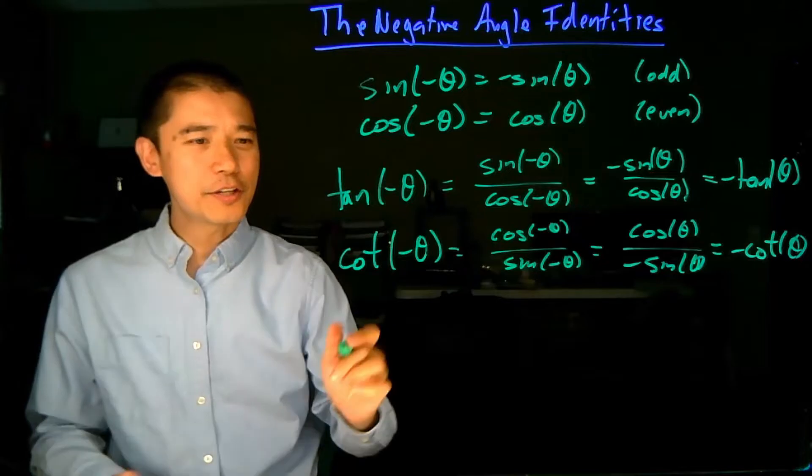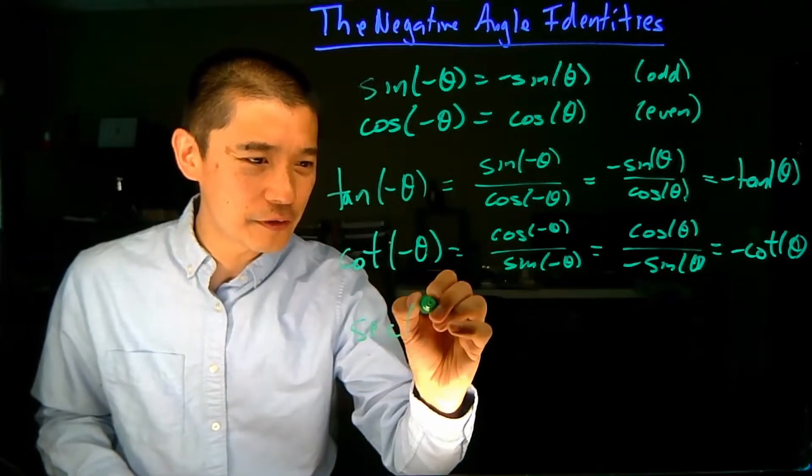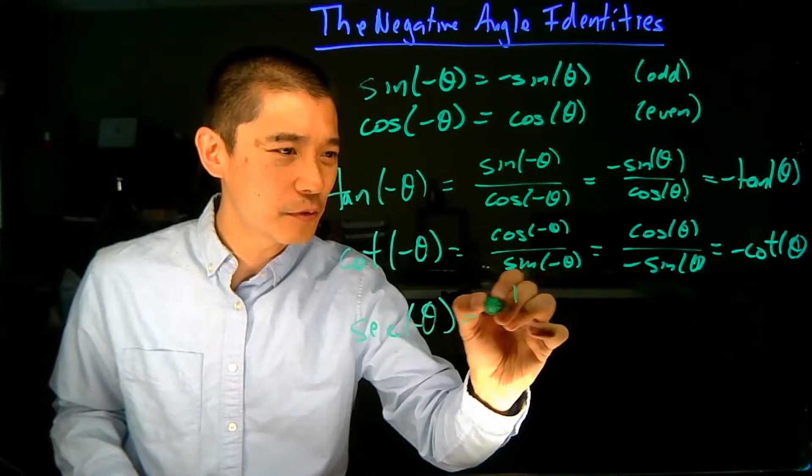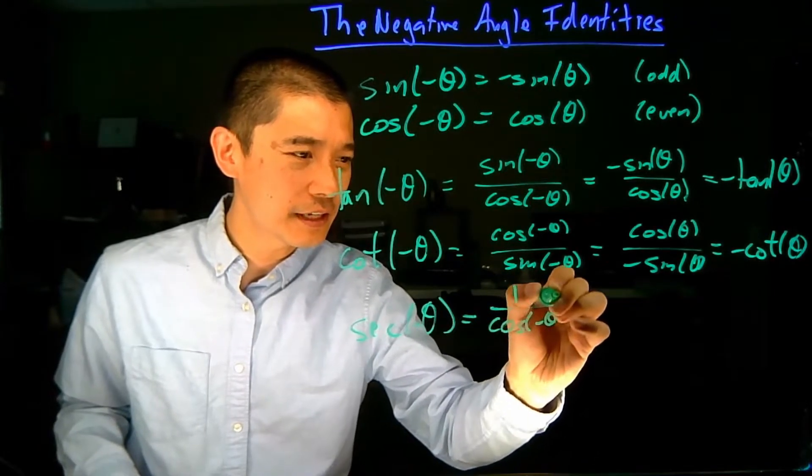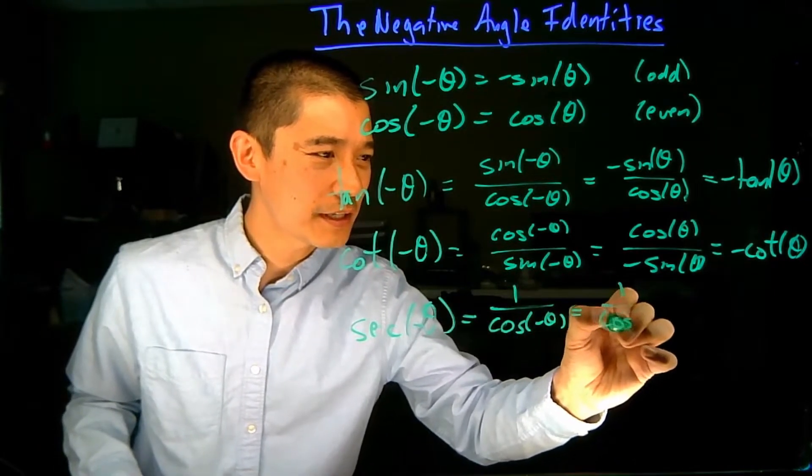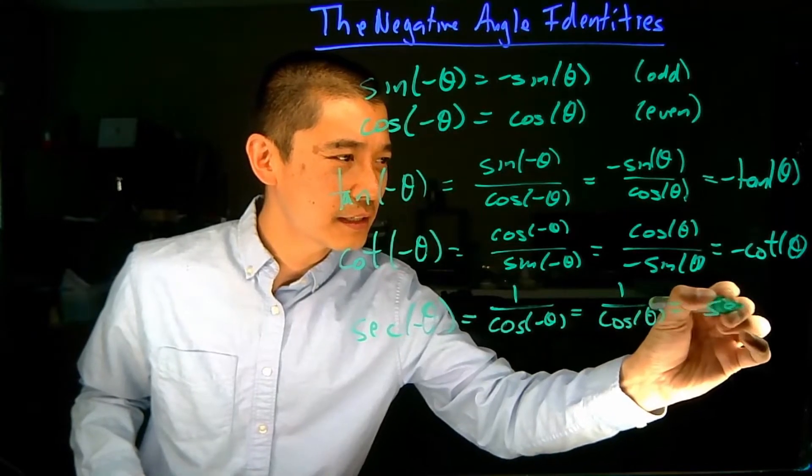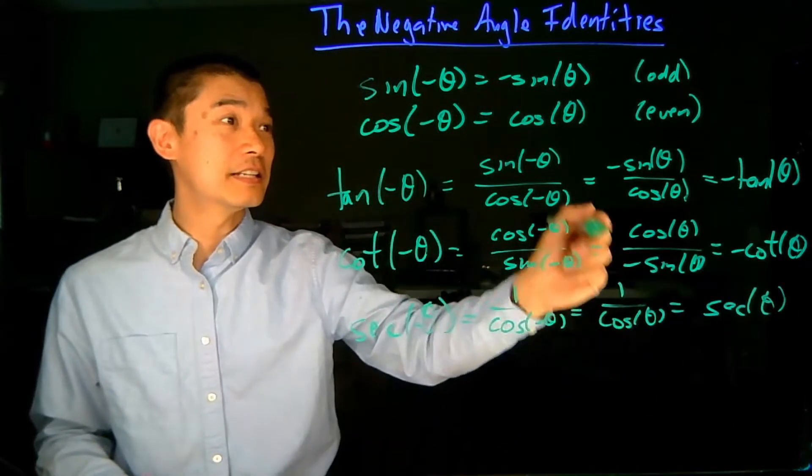And the secant and cosecant ones are actually even simpler, because there's only one function involved. So, secant of negative theta is one over cosine of negative theta, which is one over cosine theta, and that's secant theta. So, secant theta is an even function, like cosine.